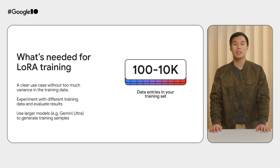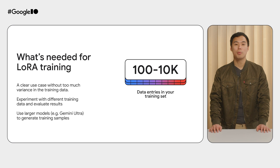Since LoRA training customizes the model's weights to perform a specific task, you need a clear use case and not too much variance in your training data. Generally, you must have at least 100 entries in your training data; the customized model is even more reliable when you have at least 1,000 entries. There is no right or wrong answer here — experiment with different subsets of your training data to see what gives you the best results. You can also use larger models, such as Gemini Pro or Gemini Ultra, to help generate training samples for Gemini Nano.